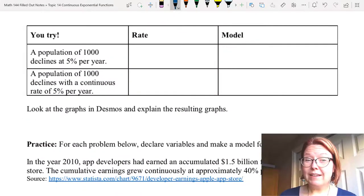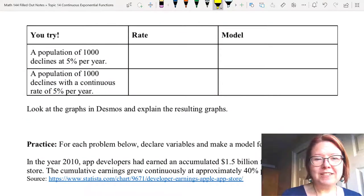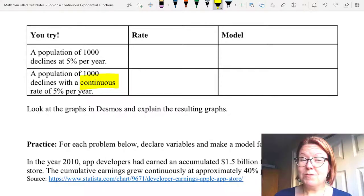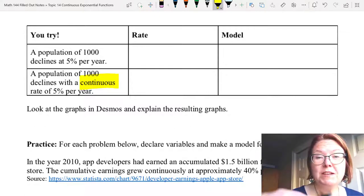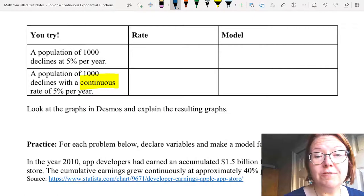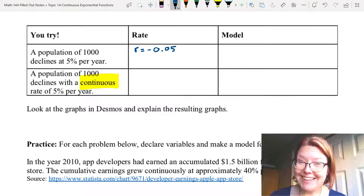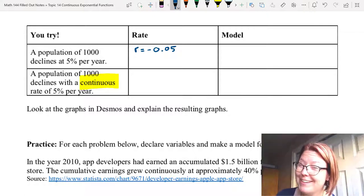Hopefully you caught the word continuous in the second scenario, and that's going to be the biggest difference between the two. The first, we're going to use discrete exponential model, and the second scenario, we'll use a continuous exponential model. With a discrete exponential model, we have an R value. The R value here is negative 0.05 because it's declining at 5%. I hope you caught the negative there.